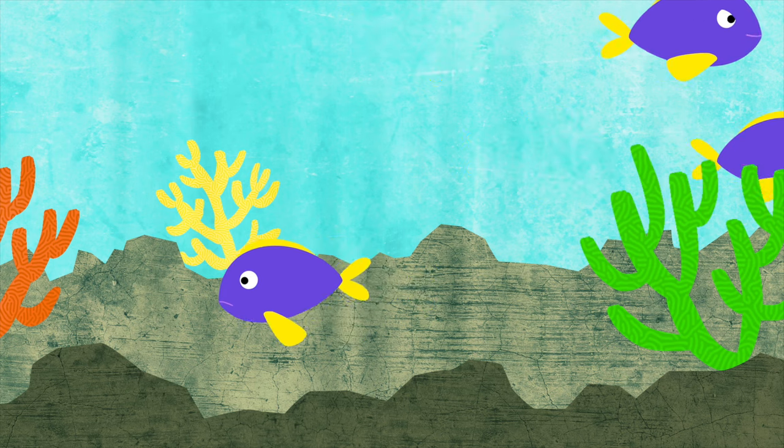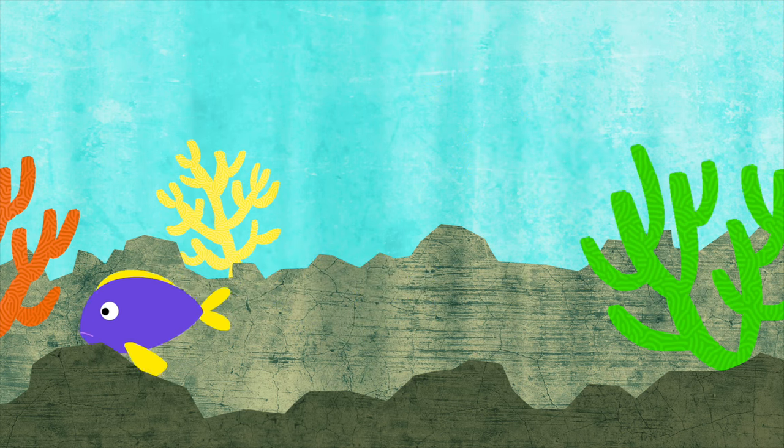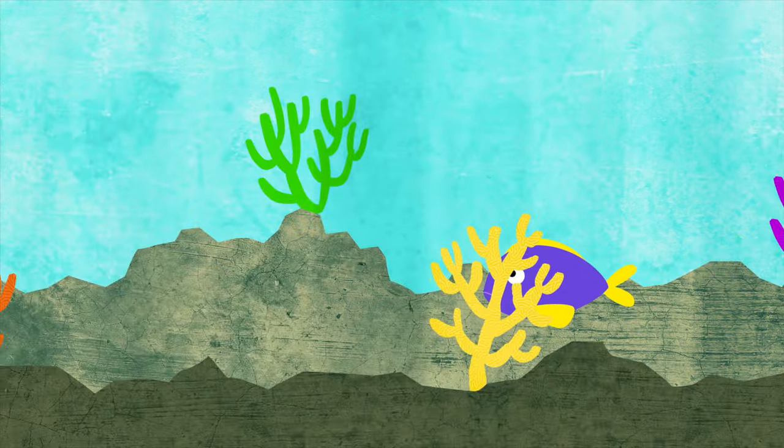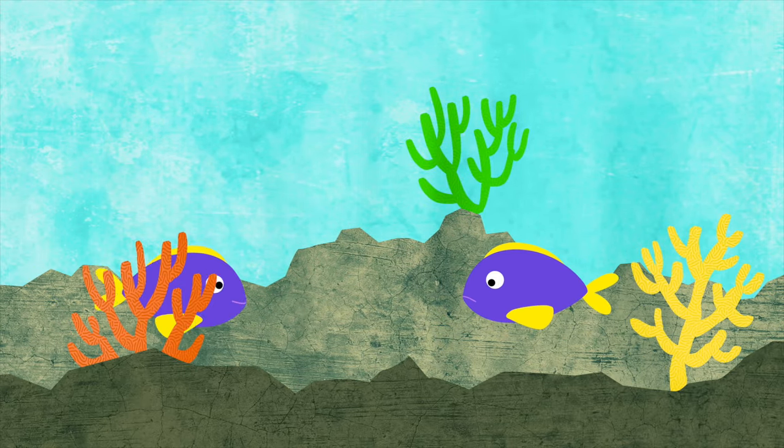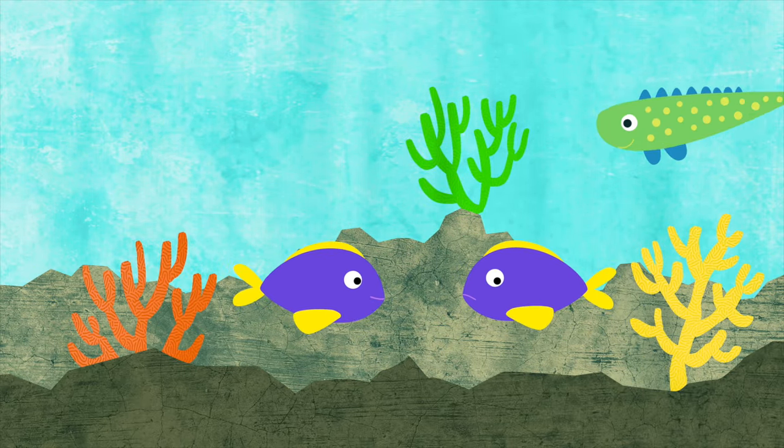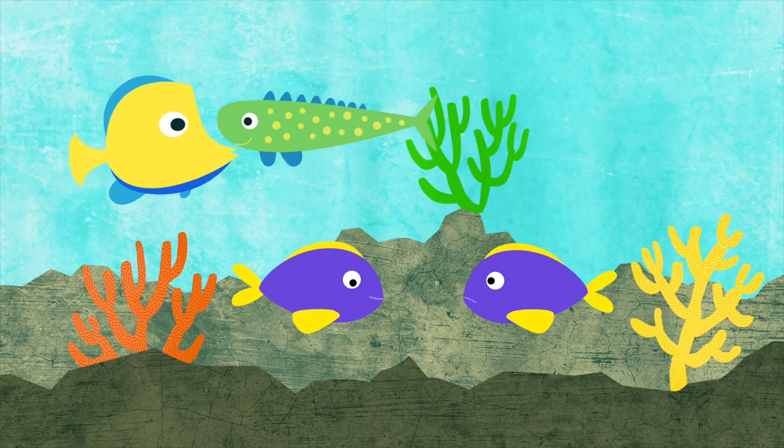Finley was sad. She knew it was wrong to be mean to the crab, but she didn't know what to do. "Hi, Floaty." "Hi, Finley." "Do you think we should be mean to the crab?" Finley asked.